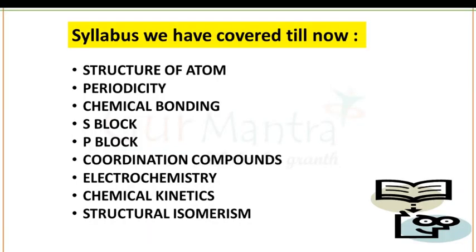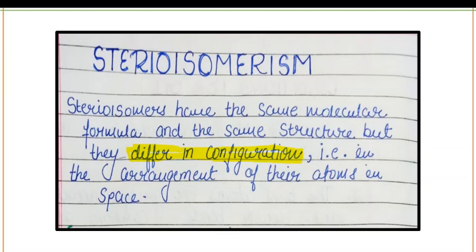Without any further delay let's begin today's topic: stereoisomerism. In stereochemistry, stereoisomerism or spatial isomerism is a form of isomerism in which molecules have the same molecular formula and the same sequence of bonded atoms, but differ in the three-dimensional orientation of the atoms in space. In simple language, stereoisomers have the same molecular formula and same structure but differ in their configuration — that is, in the arrangement of their atoms in space.